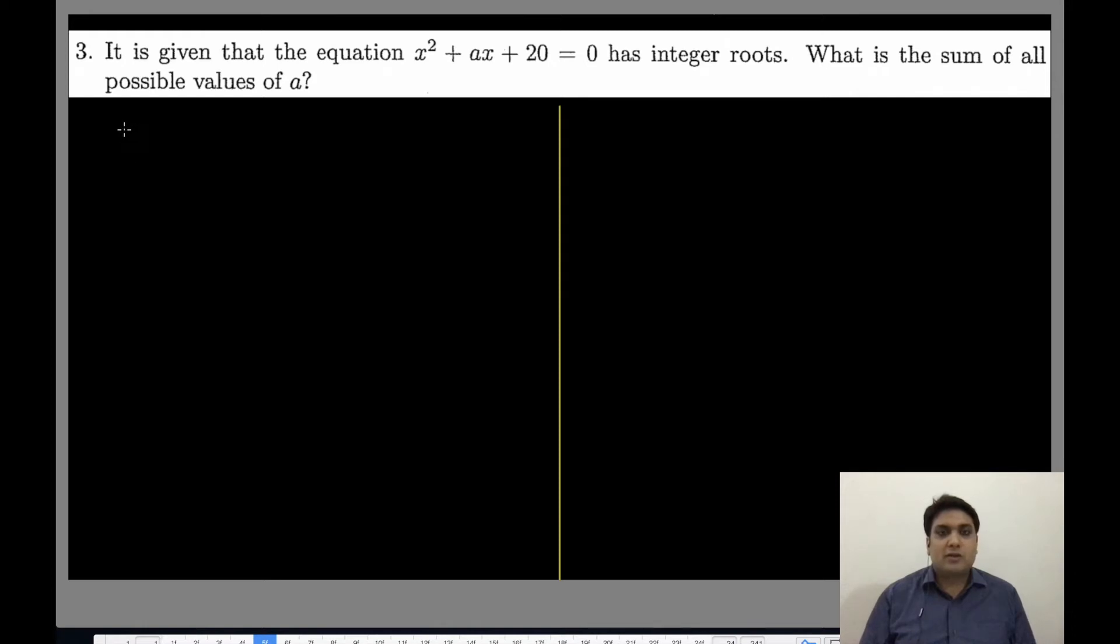This is PRMO 2013 question number 3. It is given that the equation x² + ax + 20 = 0 has integer roots. What is the sum of all possible values of a?